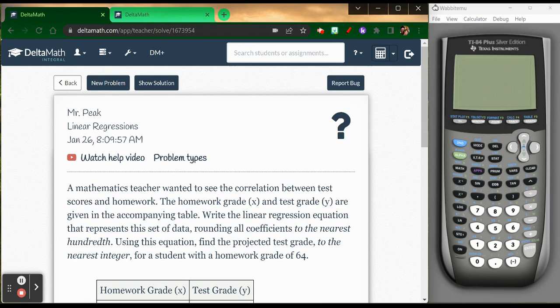So in this first problem, here's what we've got. A mathematics teacher wanted to see the correlation between test scores and homework. The homework grade X and the test grade Y are given in the accompanying table. Write the linear regression equation that represents this set of data, rounding all coefficients to the nearest hundredth. Using this equation, find the projected test grade to the nearest integer for a student with a homework grade of 64.